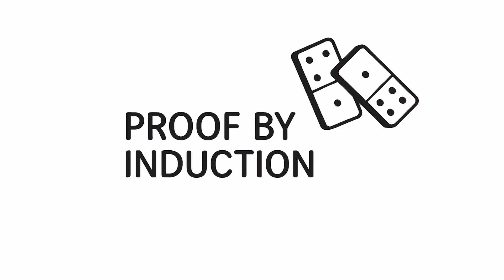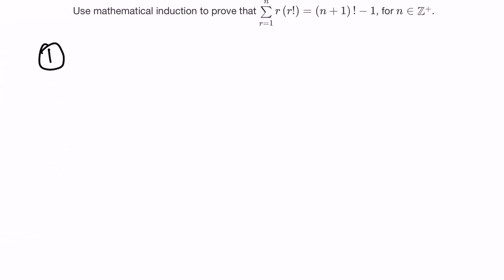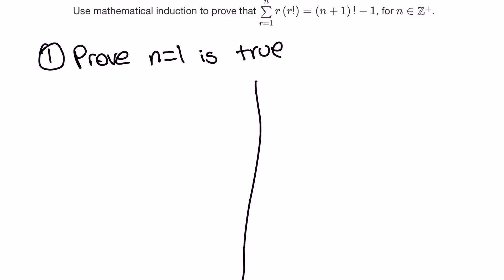As usual, the first thing that you do is you prove n equals one is true. So the first thing I like to do after that is create my LHS and my RHS — that's my left hand side and my right hand side — and then I just plug in one.